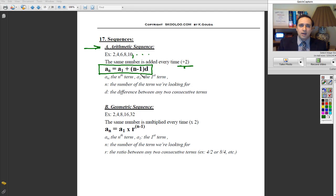plus n minus 1, where n is the number of terms that you're looking for. So if you're looking for the 50th term, then n is 50, n minus 1 inside a bracket times d. d is the difference between any two consecutive terms in a sequence.